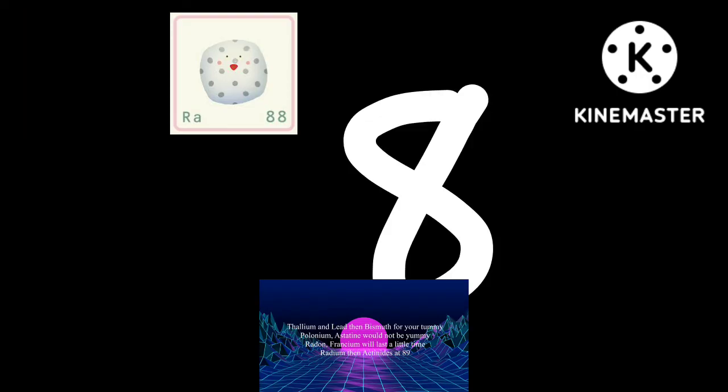Then actinium at 89. This is the Periodic Table, noble gas is stable, halogens and alkali react aggressively, each period will see new outer shells while electrons are to the right.